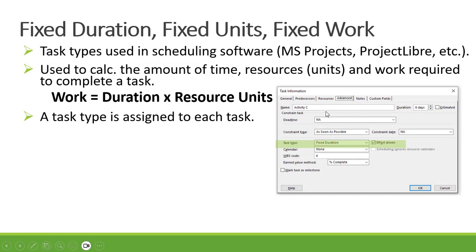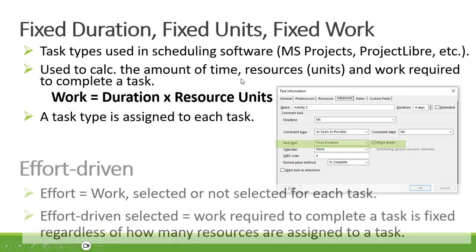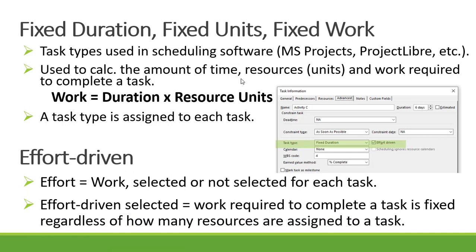In this example, we've got task information where the task type can be selected — either fixed duration, fixed unit, or fixed work — and effort-driven is either selected (ticked) or not selected (unticked). Effort-driven refers to work, and when effort-driven is selected, it means that the work required to complete a task is fixed, and will remain fixed regardless of how many resources are assigned.